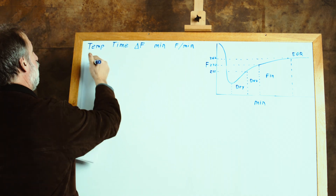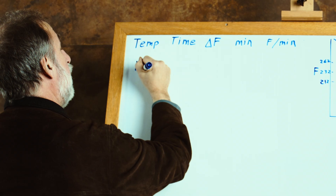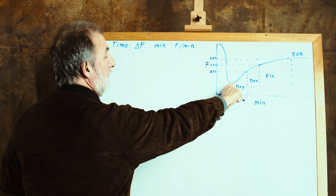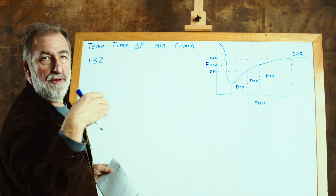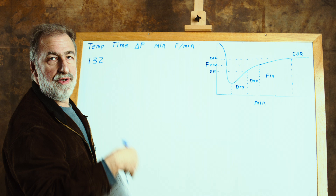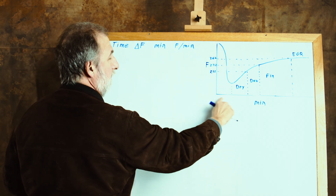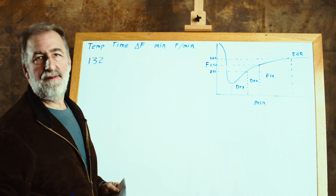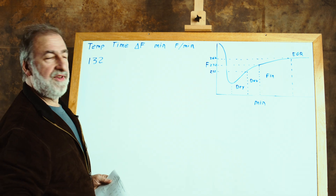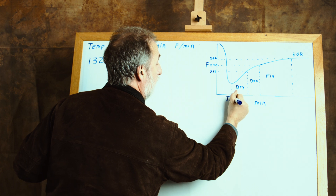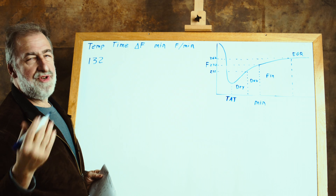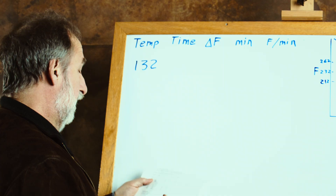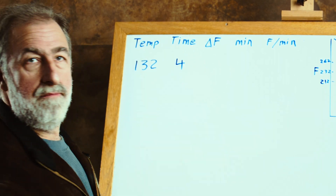So we have a roast going on. The point labeled 132 is nothing more than a point in the curve where — as you'll see in all drum roasters — you had a hot air temperature, you dumped in cold beans, and it took this length of time before the beans and the thermocouple reached the same temperature. Basically it's an artifact of measurement. It's not real, but it's very consistent and you're always going to see it. In a lot of notations this is labeled TAT — turnaround time. That simple. In this particular example it took four minutes.